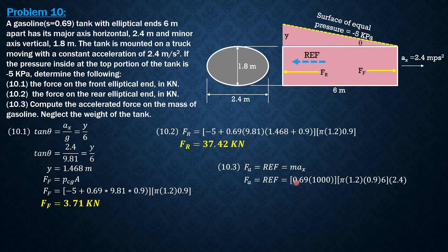So the mass of gasoline is density 0.69 times 1,000, so 690 kilograms per cubic meter for gasoline. That's the density of gasoline. The volume is phi AB, so phi 1.2 times 0.9 times length 6 meters. So this is the mass in kilograms times acceleration 2.4, so it becomes newtons. Then divide everything by 1,000 to convert it to kilonewtons. So using the calculator, the accelerated force or the reverse effective force is 33.71 kilonewtons.